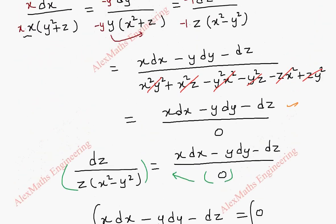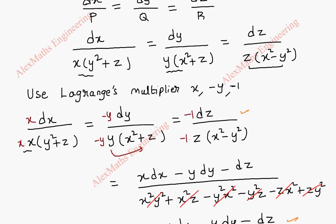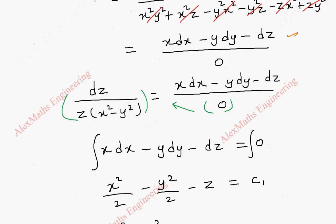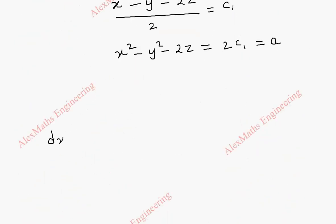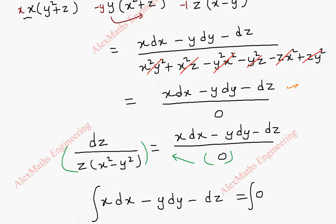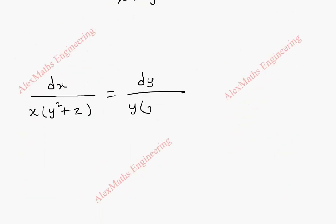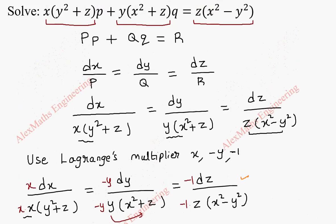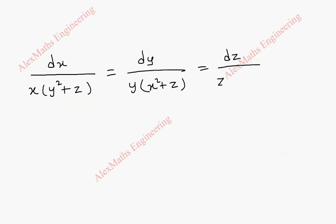In the same way we have to choose another set of multipliers. Let's copy the terms first: dx/[x(y² + z)] = dy/[y(x² + z)] = dz/[z(x² − y²)].